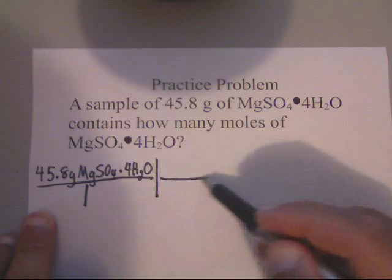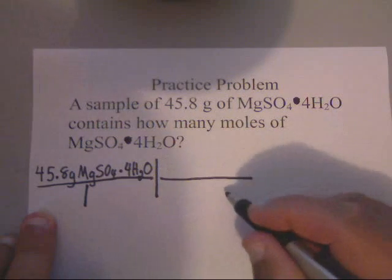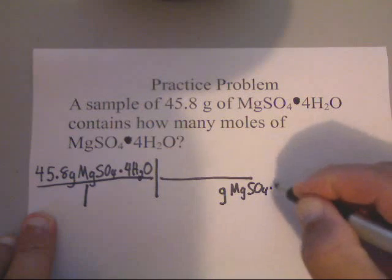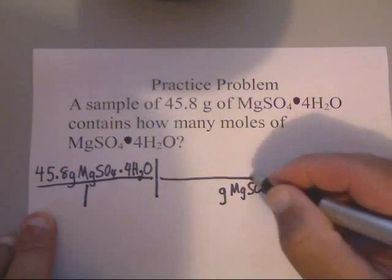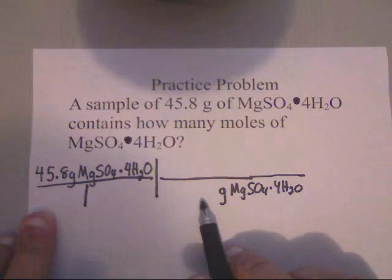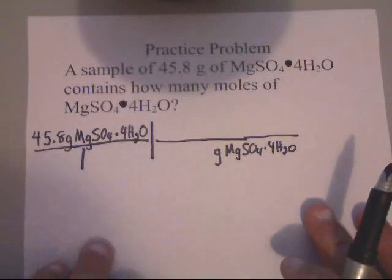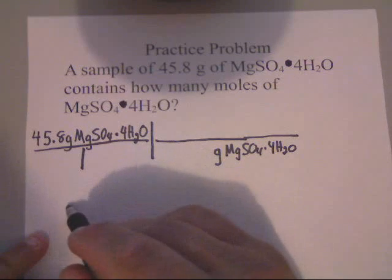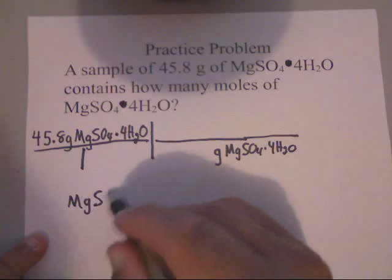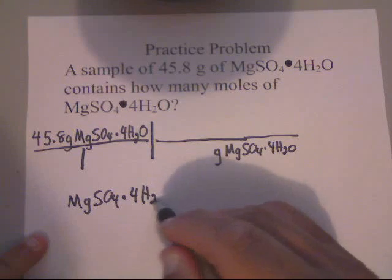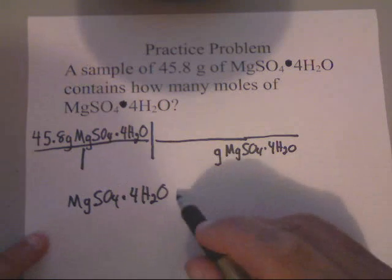Then, our next step is to put this grams of MgSO4·4H2O. Now, I need the molar mass of this. I don't have the molar mass of this, so I need to calculate that. Now, remember the formula is MgSO4 times 4 waters, that's 4H2O. Make a grocery list, so to speak.